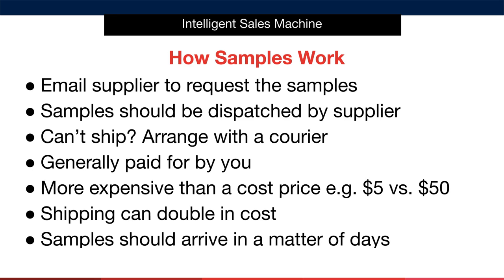Your freight forwarder may also be able to ship this for you via air, which is certainly worth checking when you begin to work with a freight forwarder a little later on in this program. In terms of the payment for samples, they're generally paid for by you and, often times, they can work out to seem relatively expensive. For example, the cost price of the item is $5, but they might charge you $50 for the sample. The best advice here is not to allow the cost to put you off ordering the sample. When you consider that over the next 3, 5, or 10 years you'll be ordering thousands of these items and making significant profit on every sale, that small $50 cost doesn't seem so much at all. The shipping can double in cost as you're ordering such a small number of units and shipping them a long way via air, but the samples will arrive in a matter of days and you'll be able to track the items the entire way from source to your location.